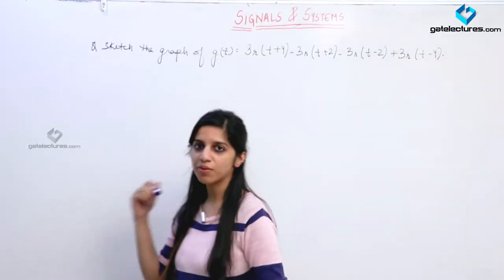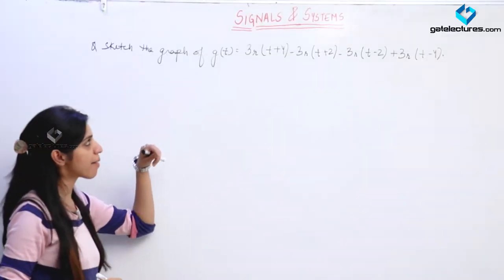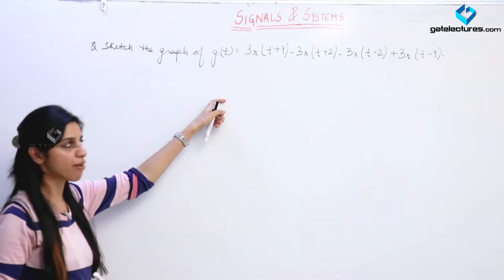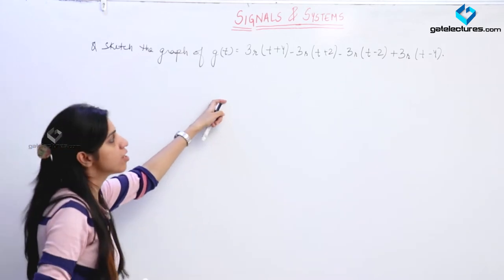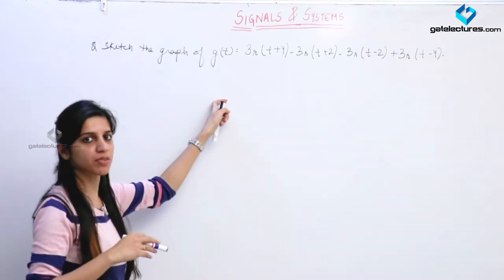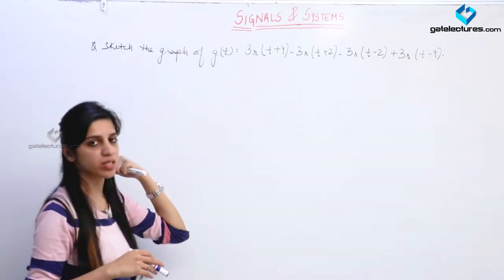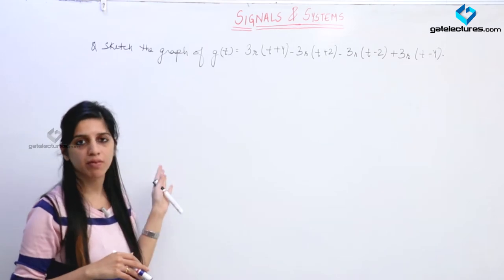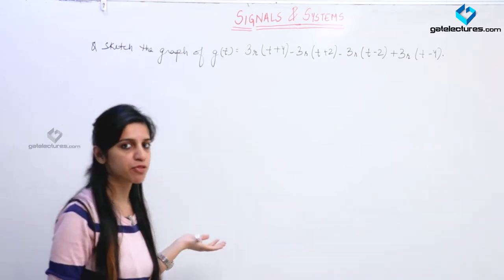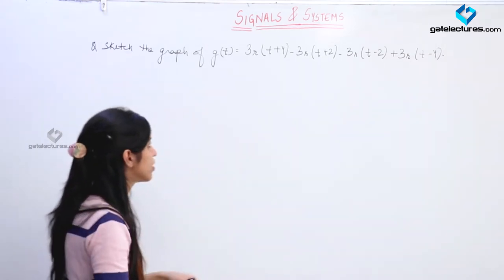Now we are looking at a question. We are given shifted ramp signals and we are asked to draw the graph for the signal. We are just going to inverse the procedure. Previously we have seen a question where we are given a graph and we represent it with the help of shifted ramp signals. Now we are just going to do the inverse.